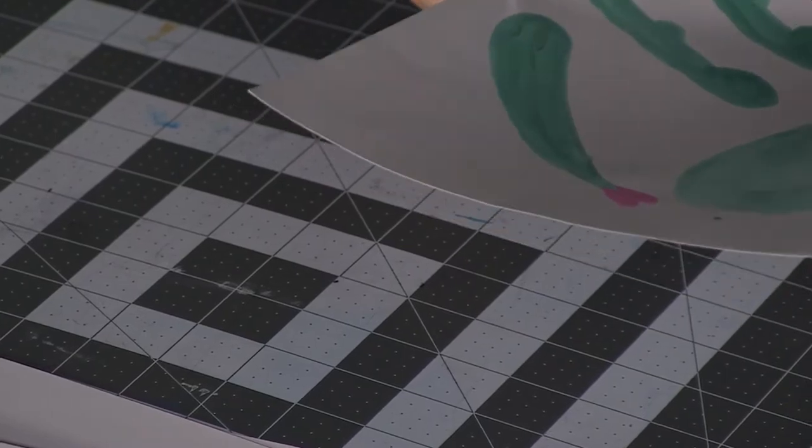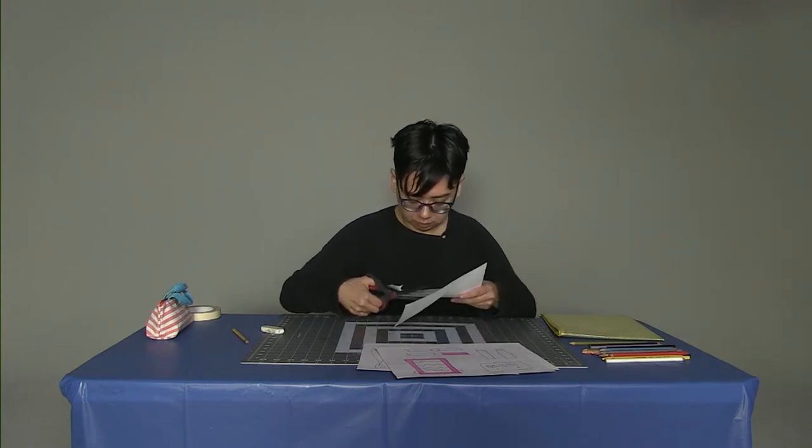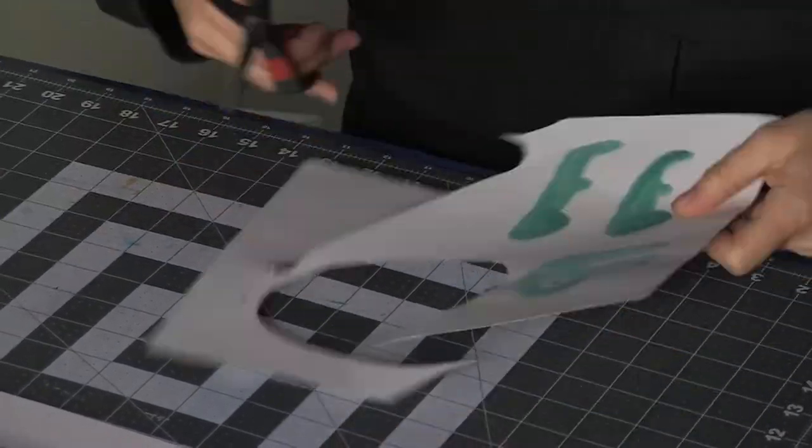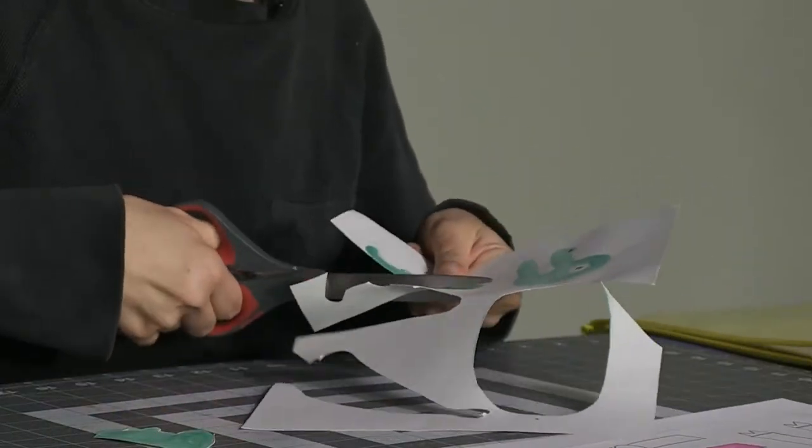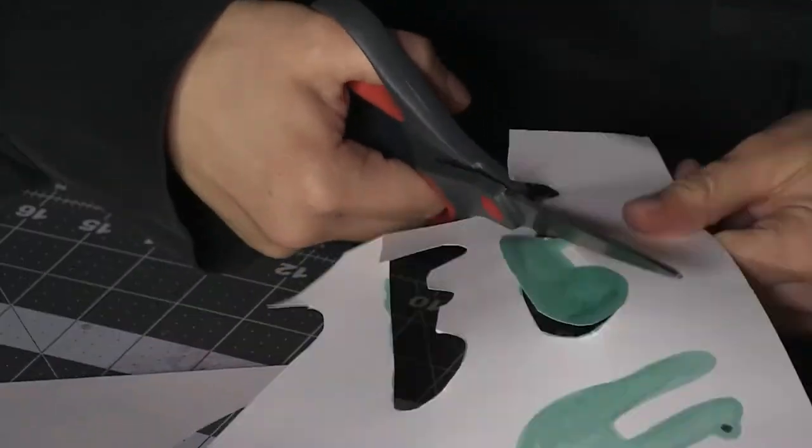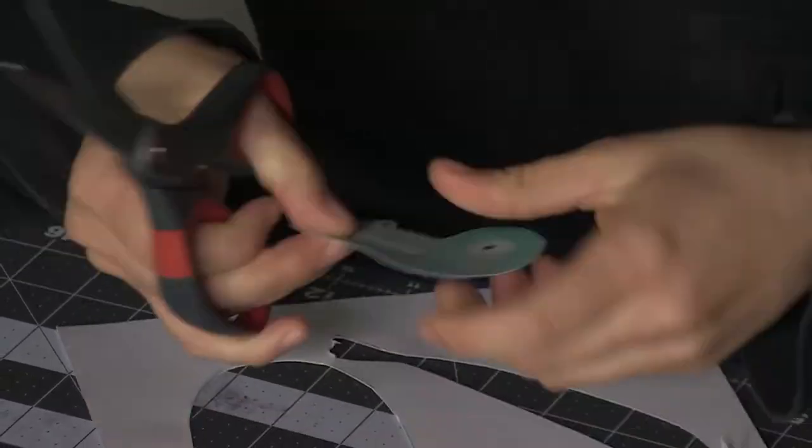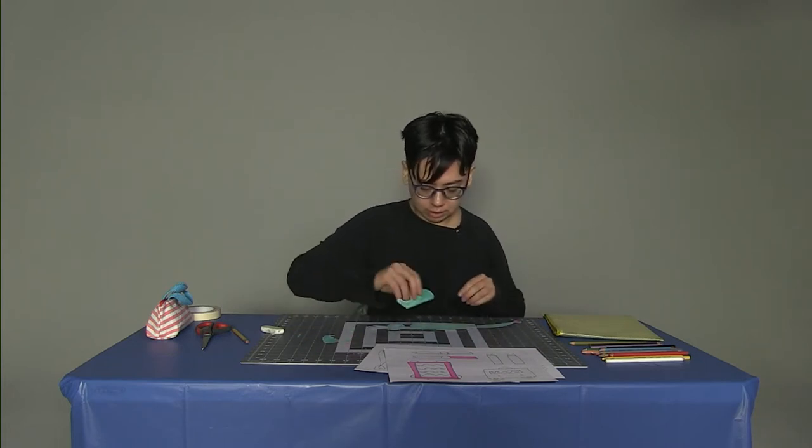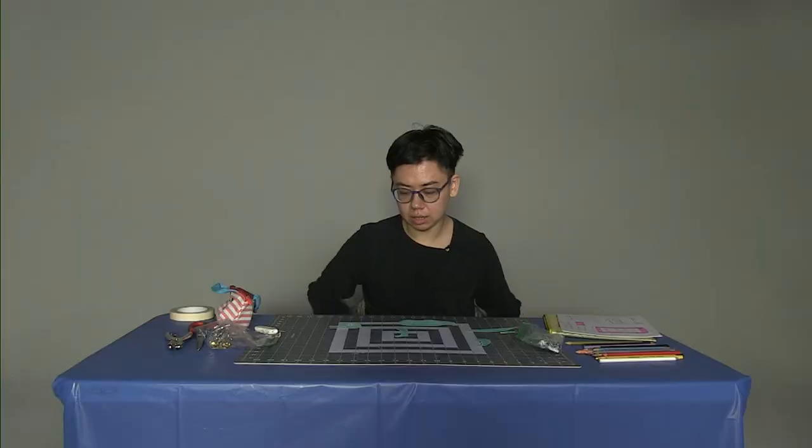So the next thing to do is to cut out your different pieces. So I'm going to cut out my tail. So I have my head, my body, my tail. And this alligator only has two legs. And now I have to think about how to attach them together. So I have all of my parts cut out.